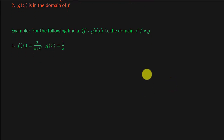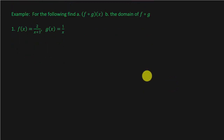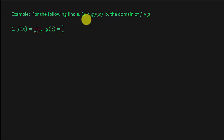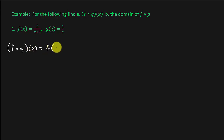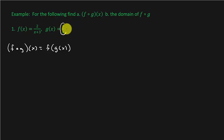We've got three problems to work. For the following, find the composition of the two functions and then the domain. Let's find the composition first. f circle g of x is equal to f of g of x — that's the definition of it, that's what this means. So what we're going to do is take this one over x. f of g of x — well, what is g of x? g of x is one over x. So that's f of one over x.